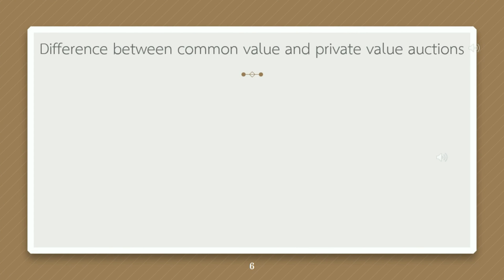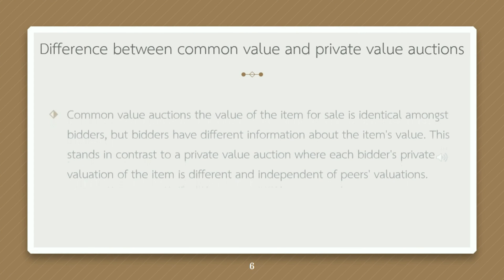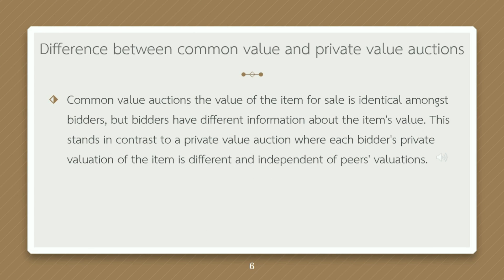The difference between common value and private value auctions: in common value auctions, the value of the item for sale is identical amongst bidders, but bidders have different information about the item's value. This stands in contrast to a private value auction, where each bidder's private valuation of the item is different and independent of peers' valuations.